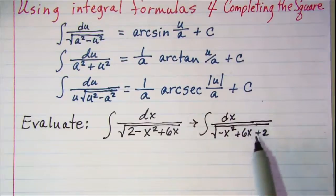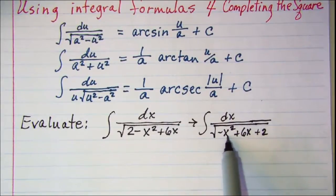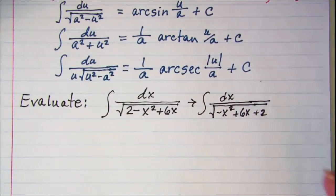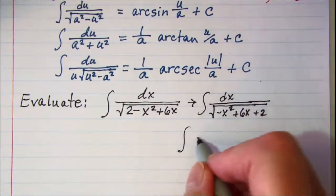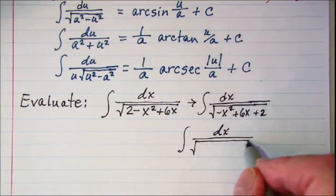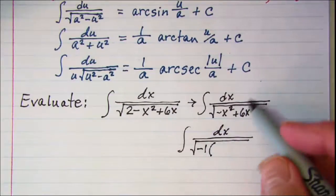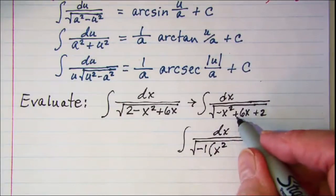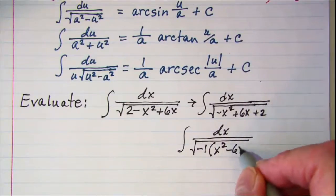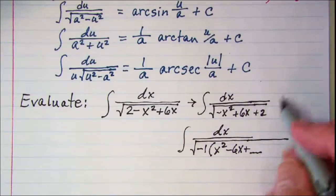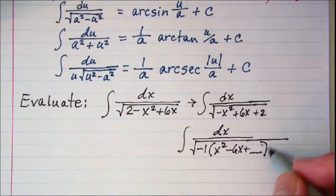Now recall that when you complete the square you basically do it with these two terms and I have to have a positive 1 here in the front, so I'm going to factor out a negative 1. When I do that I have just x squared and then minus 6x, and then I like to put a blank here that'll be part of the completing the square, and then close up my parentheses and my positive 2 is out here in the back.